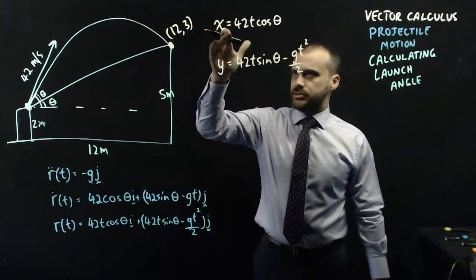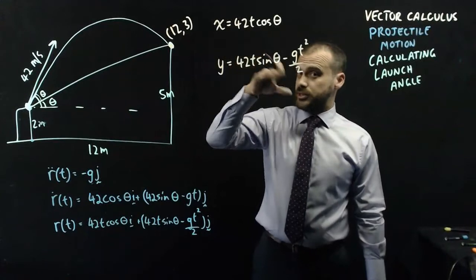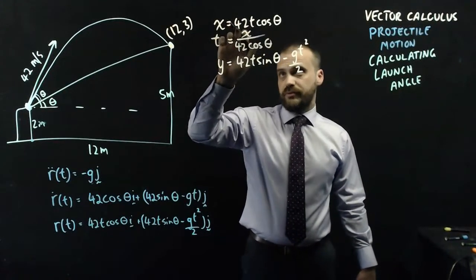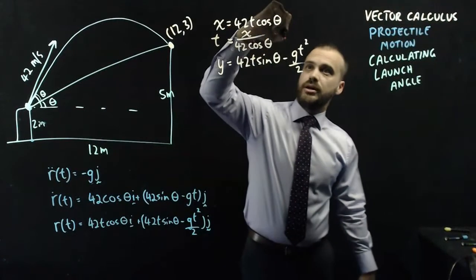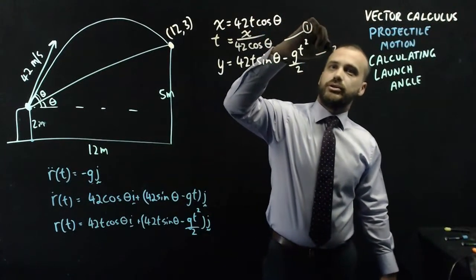Now, I just need to set maybe this one to t. So if I divide both sides by 42 and cos theta, I get t equals x on 42 cos theta. I'll call this equation 1, and I'll call this equation 2.